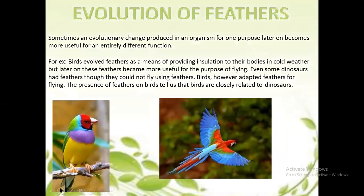Evolution of feathers. Sometimes an evolutionary change produced in an organism for one purpose later becomes useful for other functions also. For example, birds evolved feathers as a means of providing insulation to their body in cold weather. But later on, these feathers became more useful for the purpose of flying. Even some dinosaurs had feathers, though they could not fly using them. Birds, however, adopted feathers for flying — so the presence of feathers on birds tells us that birds are closely related to dinosaurs.